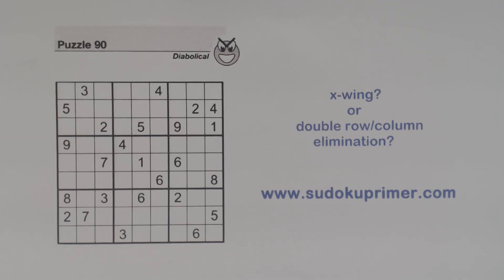The double row and column elimination technique is not an X-wing. I have spoken with a few people who have implied that they are the same, and I've also seen comments on this channel implying that. X-wings and double elimination, although they're related, are two different things and they have different uses.